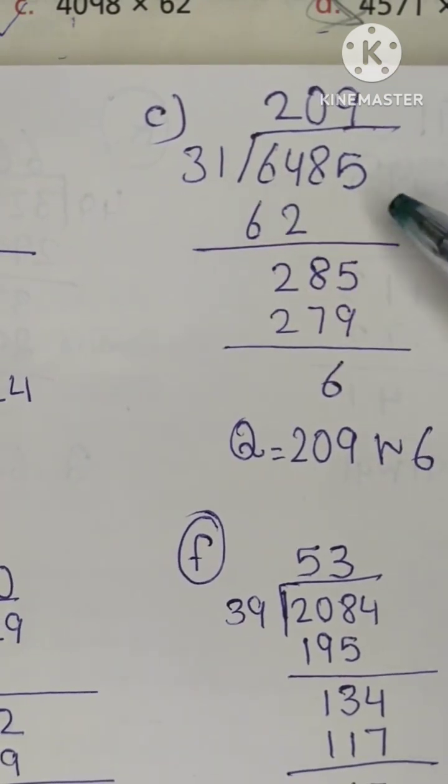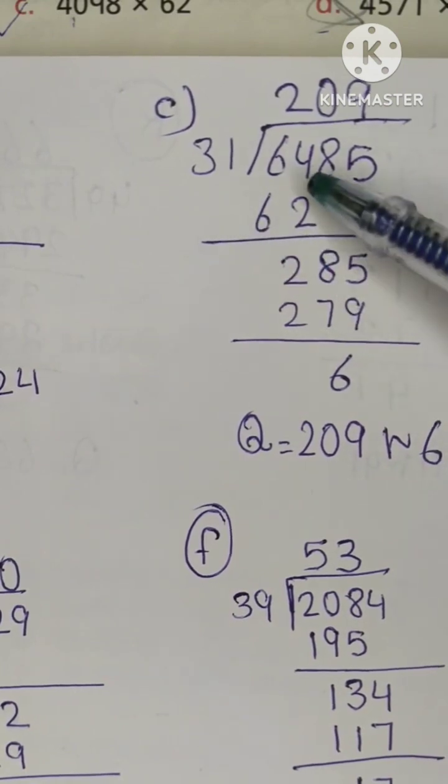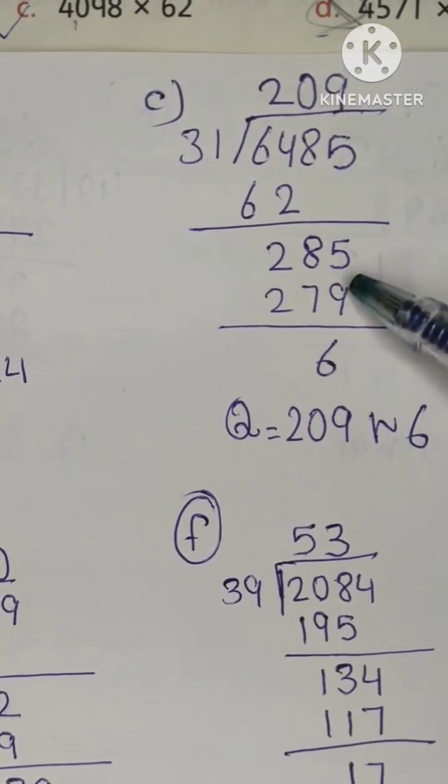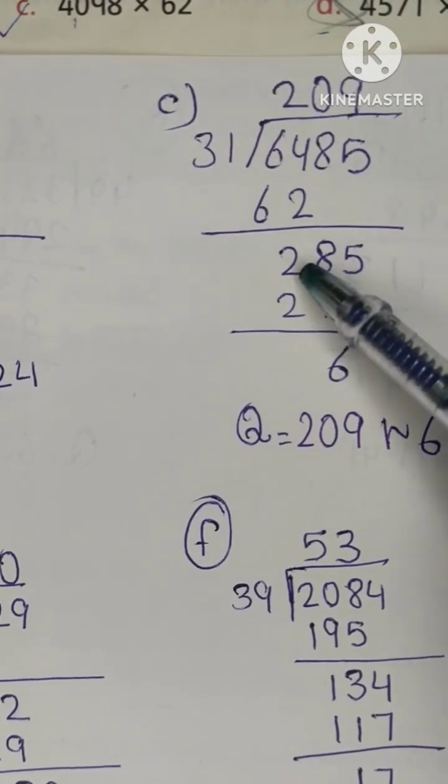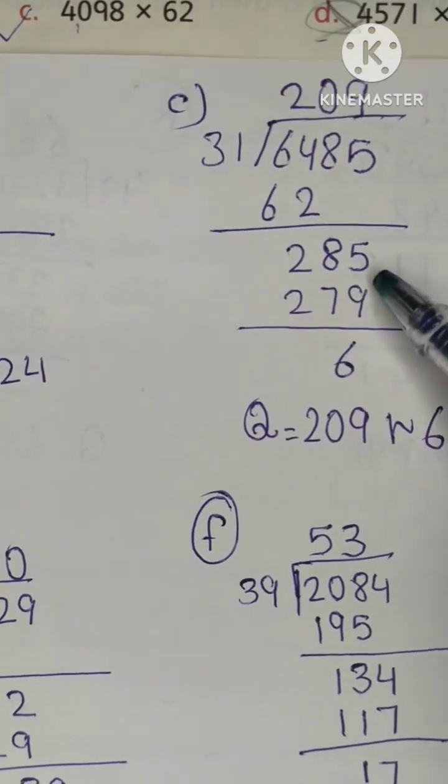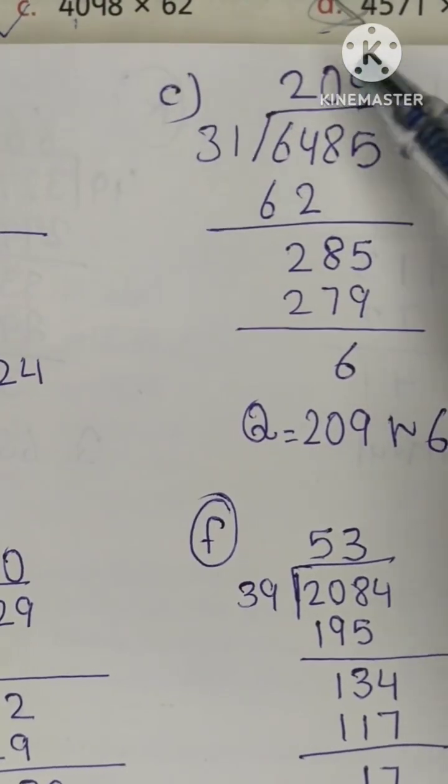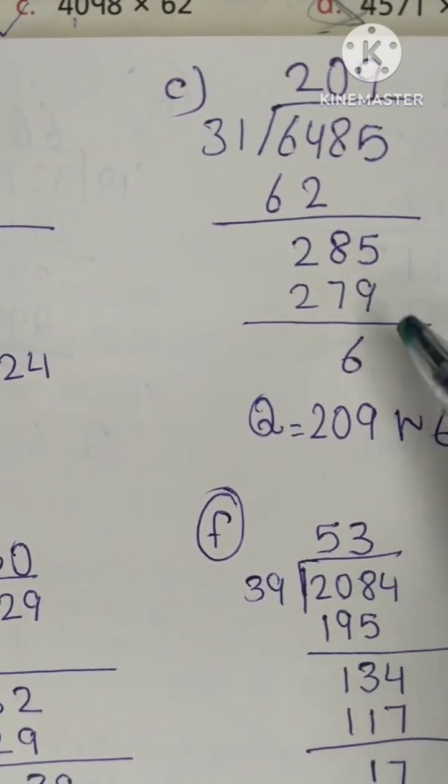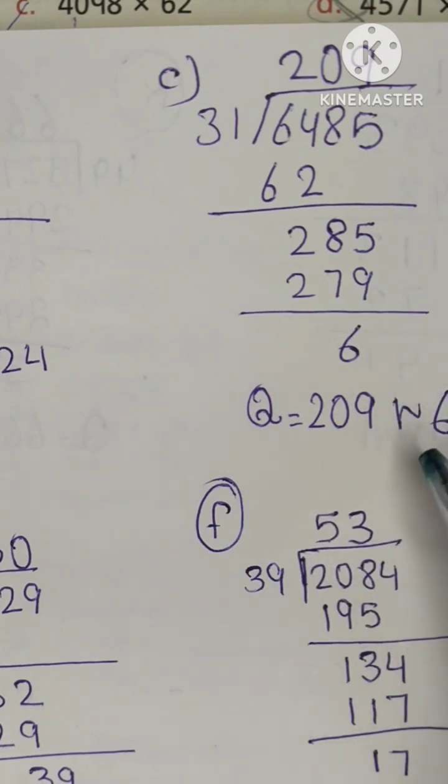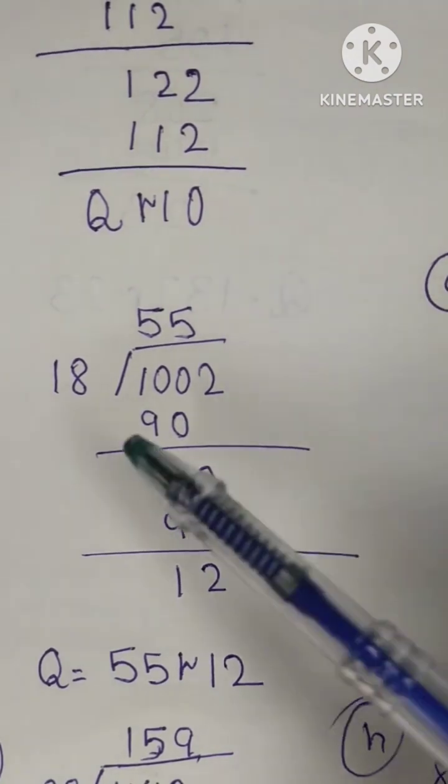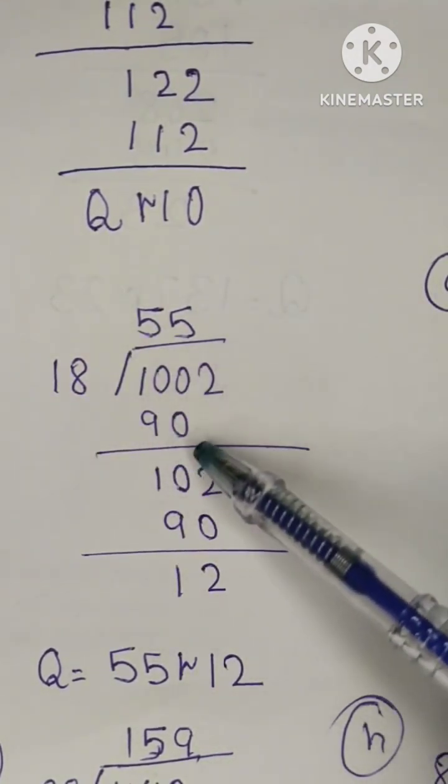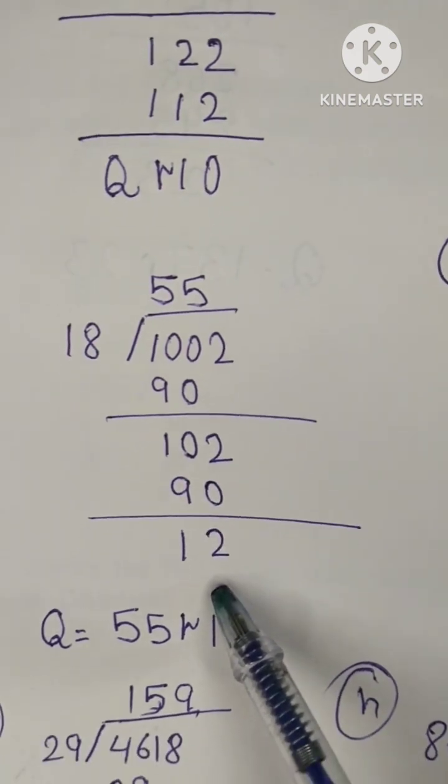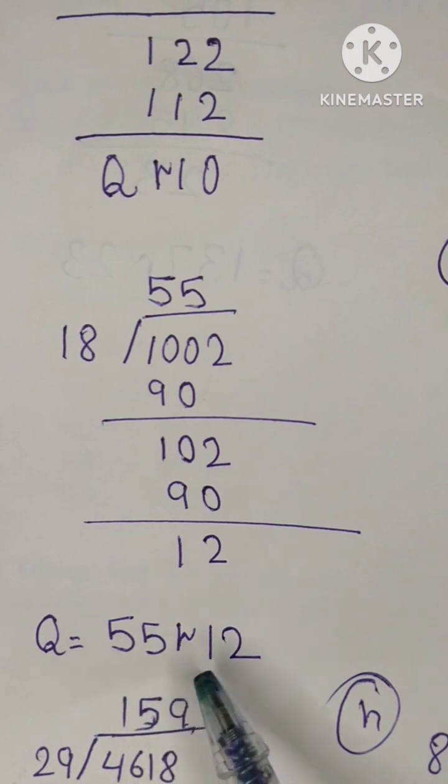Our next question is 43 into 5629. 31 into 62 is... minus, 28 drop. Now 28 was small, you have to place 0 here. Then 31 times 9 is 279 and we have to subtract. After, we have remainder 6, quotient is 209 and remainder is 6. Next question, 18 into 5 is 90 we have minus, so your answer is 90. We have answer 12, so your answer is 55 and remainder is 12.